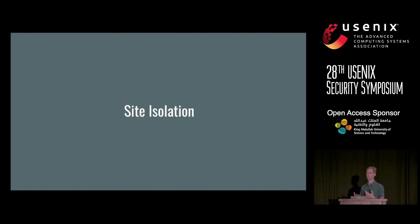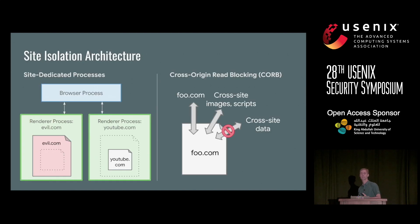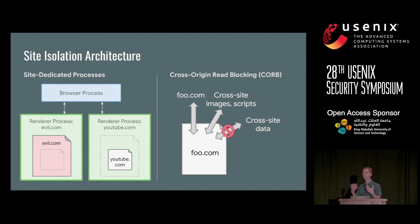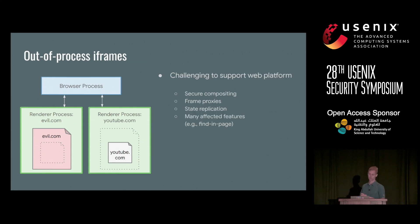Site isolation is an architecture that tries to mitigate both types of attacker by putting data worth stealing out of reach. At a high level, the architecture consists of two main concepts: first, providing renderer processes dedicated to a single site, so all documents and workers within that process are limited to that particular site, even for iframes. Second, filtering what information is allowed into that process, especially from the network — which is challenging for compatibility reasons because webpages can access lots of cross-site data.